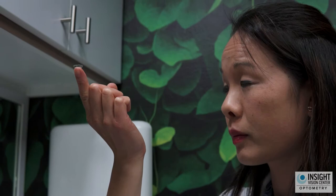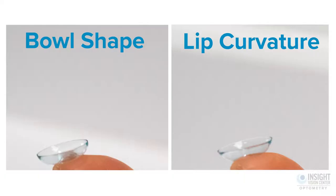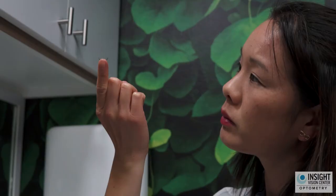Step 5: Inspect the contact lens to confirm it is not inside out. If the lens has a bowl shape, it is correct. If it has a lip curving outwards, then it's inside out.